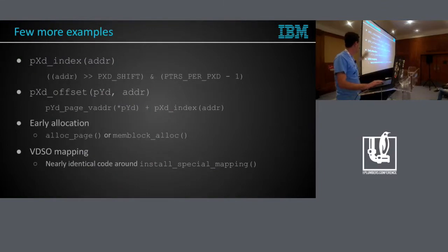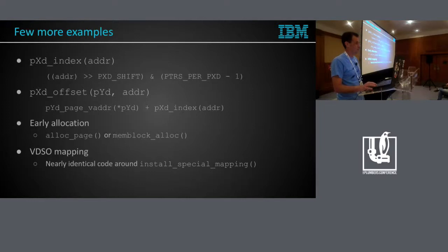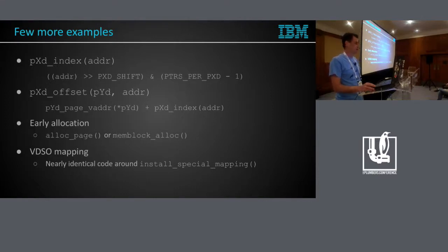It's not only that — those old guys like p-something-index, p-something-offset are pretty much the same for every architecture that implements those levels. Many architectures have a helper for early allocation that says: if slab is already initialized, we do page_alloc; otherwise, we do memblock_alloc.